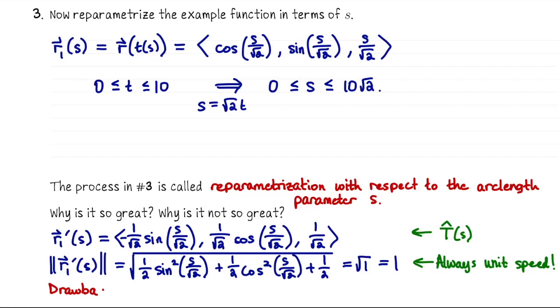Why is it not so great? Well, for this particular example of the helix, it was a pretty okay calculation, but sometimes it's very computationally difficult. Take this as a warning. When you're doing these problems, if you're doing some reparametrizations with respect to arc length, follow these three steps. First compute the arc length function, then invert to solve for t in terms of s, then plug that into the original parametrization.